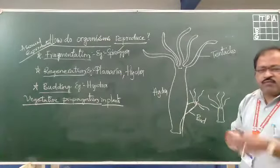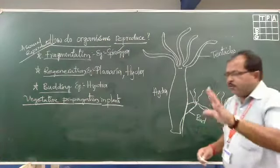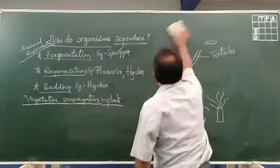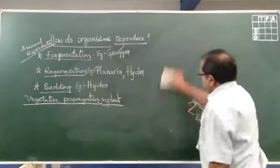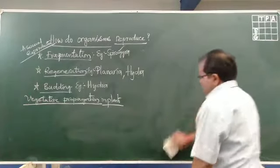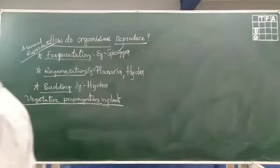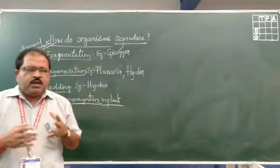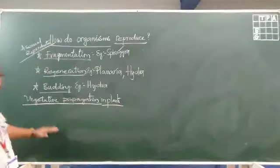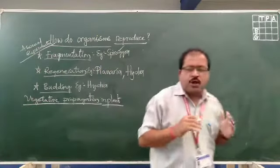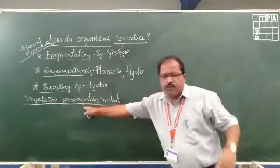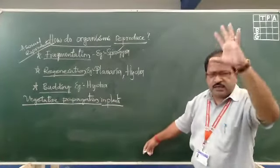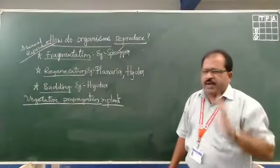Next, we are going to learn about the vegetative propagation of plants. This is also a kind of asexual reproduction, and it is present in almost all plants.